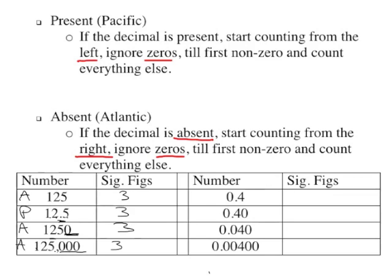All these next ones, the decimals are present, present, present, present. If the decimal is present, we're going to start counting from the left — ignore zeros to the first non-zero and count everything else. So for 0.4, we start from the left, ignore this first zero, and just count — that only has one significant figure.